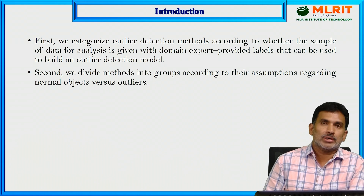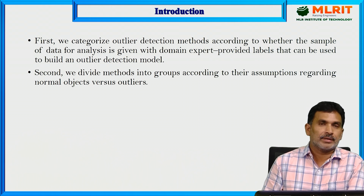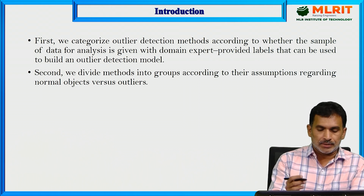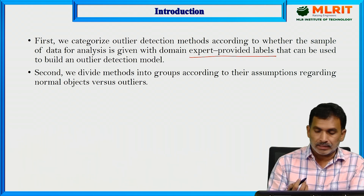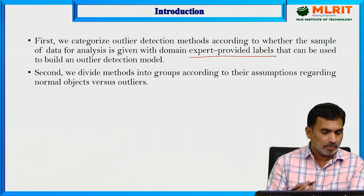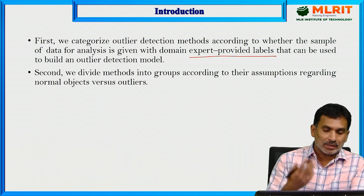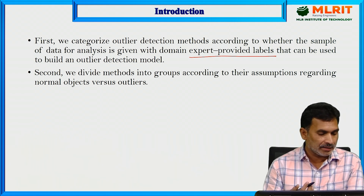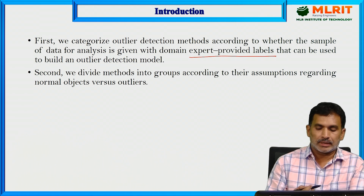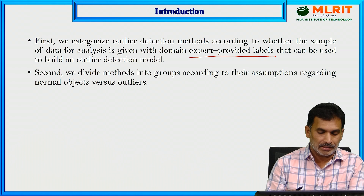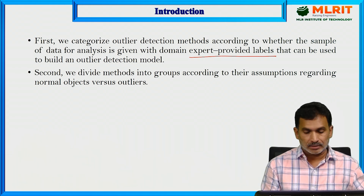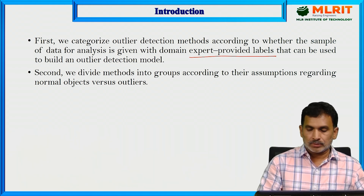First, we categorize the outlier detection methods based on whether the sample data is given with labels provided by domain experts — that is, whether the data has labels or not. Second, we divide the methods into groups according to their assumptions regarding normal objects versus outliers, and based on those assumptions we apply the outlier detection.